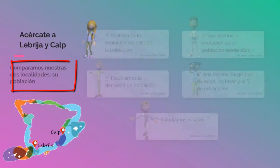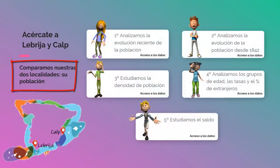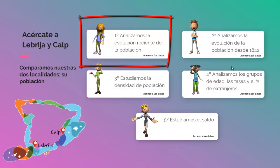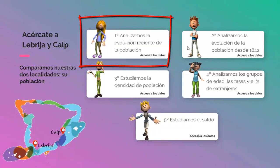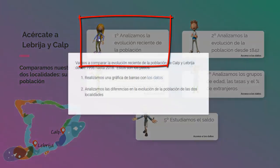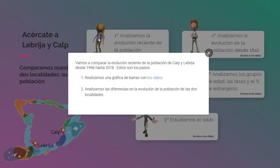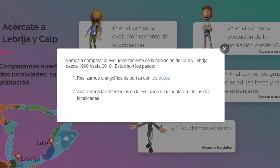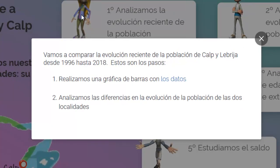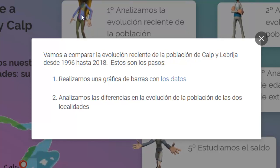Let's first analyze their population, starting with the first task. You have to do five graphics. We are given the task to analyze the recent evolution from 1996 to 2018 of Calpe and Lebrija. We have to do a graph, which is what we are going to show with this video, and then do a comment on the differences between the evolution of the population of the two localities.